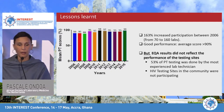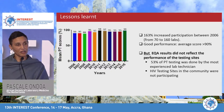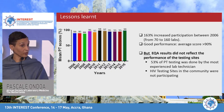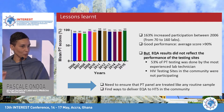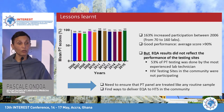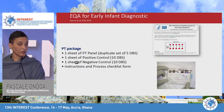However, when we look at the results more closely, we realize that 53 percent of the proficiency testing was being given to the most experienced laboratory technician. For HIV testing sites in the community, they were either not participating or sending the panel to the laboratory, which was really not the point. We need to make sure that PT panels are treated like routine samples, and not that the best technician tests the panel. There is also a need to find ways to deliver EQA to the community.